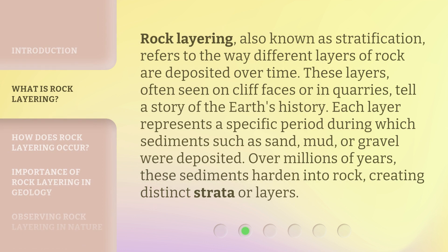Rock layering, also known as stratification, refers to the way different layers of rock are deposited over time. These layers, often seen on cliff faces or in quarries, tell a story of the Earth's history. Each layer represents a specific period during which sediments such as sand, mud, or gravel were deposited. Over millions of years, these sediments harden into rock, creating distinct strata or layers.